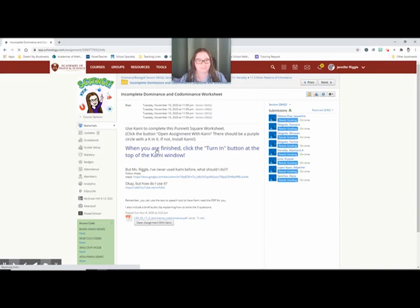And it's going to be like, yo, you need some Kami. So use Kami to complete this assignment. You should have a button right here that says Open Assignment with Kami. If you do not have that button, follow this link right here. But Ms. Riggle, I've never used Kami before. What should I do? Click that link. It's going to give you your instructions, how to install it, how to make sure it's working.